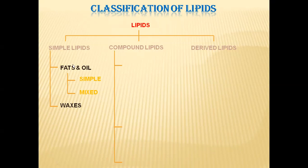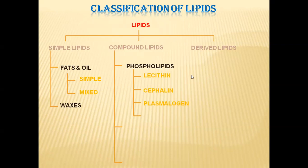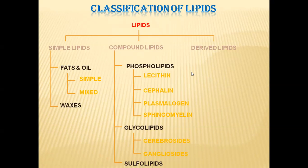Coming to the classification of compound lipids, compound lipids are classified into three subgroups. One is phospholipids, and in phospholipids we have lecithins, cephalins, plasmalogens, and sphingomyelin. Second category in compound lipids are glycolipids, and in glycolipids we have cerebrosides and gangliosides. Third category in compound lipids is sulfolipids.